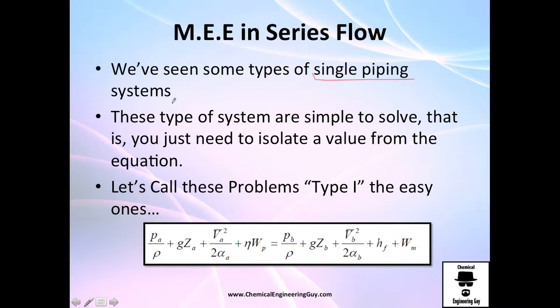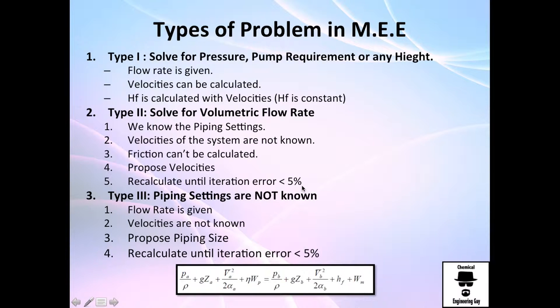So these are simple, actually they are simple to model. And the only thing that we needed to do was to isolate any value and find out the other value. Sometimes we had to calculate maybe a height or maybe a pressure or maybe something. But the idea was that we always got everything and we just needed to solve for the variable. For example, the pump requirements or the change in pressure, the final velocity, always very punctual value. And these are the typical examples of mechanical energy equation type 1 in series.